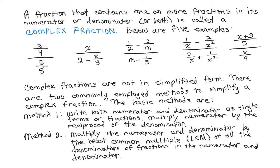If you look at the fourth example, one over x minus two over x squared in the numerator — there are two fractions in that numerator separated by a subtraction sign, so that's not a single fraction. In method two, you don't need to have it in that single-fraction form. Instead, to simplify the complex fraction, the first step is to multiply the numerator and denominator by the least common multiple of all the denominators of all the fractions in the numerator and the denominator.